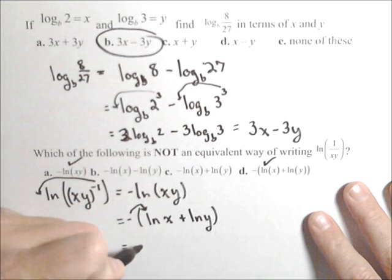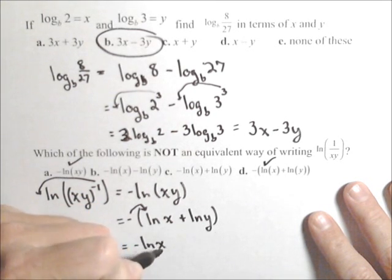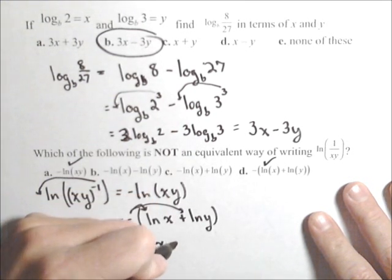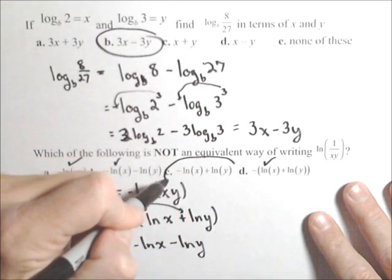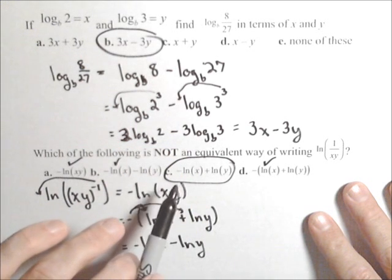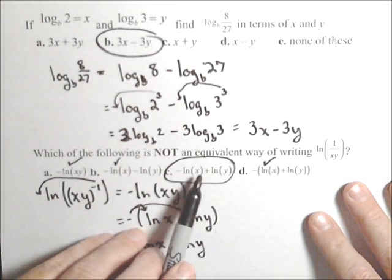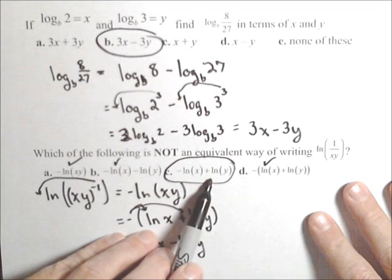Finally, I can distribute the negative through. So I have negative ln of x minus ln of y. So c is okay. The only one that is not okay, sorry, b is okay. The only one that's not okay is c because that should be a negative there for this to be true.